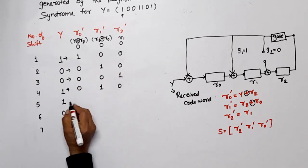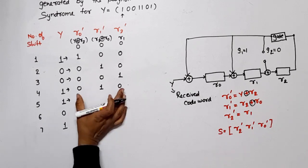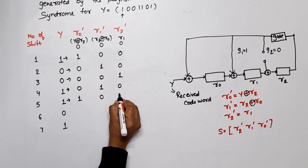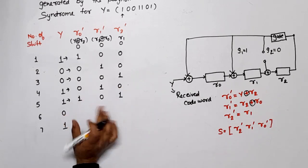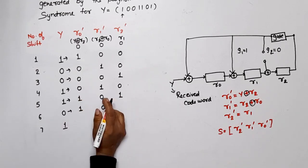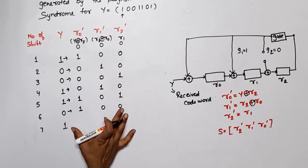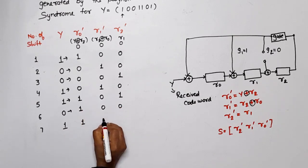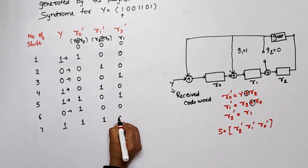Now, 1 and 0, 1. 1 and 0, 1. First and last bit, 0. This bit shifted here. Now, 0 and 1, 1. 1 and 1, 0. What will happen here? 0. Now, 0 and 1, 1. 1. First and last bit, 0. 1. This R₁ shifted here.